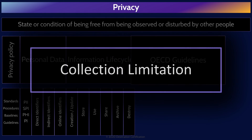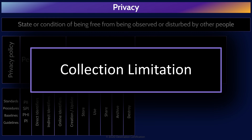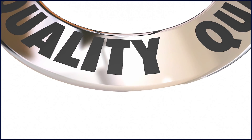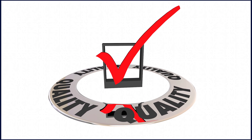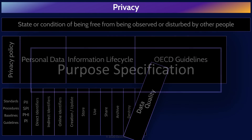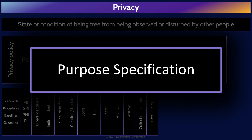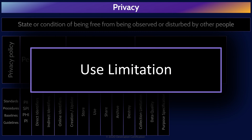Eight principles are defined, beginning with collection limitation, which means that organizations should limit the collection of PII, obtain it lawfully, and where appropriate, with the knowledge or consent of the data subject — the individual for whom the data is about. The data quality principle means PII should be relevant, accurate, complete, and kept up to date; in other words, if an organization collects PII, they are now accountable for the integrity and accuracy of the data. The purpose specification principle means the purposes for which PII is collected should be specified when collected — organizations must clearly articulate what the PII they collect will be used for. The use limitation principle means PII should only be used or disclosed based on the purposes for which it was collected, with consent of the data subject or by authority of law.